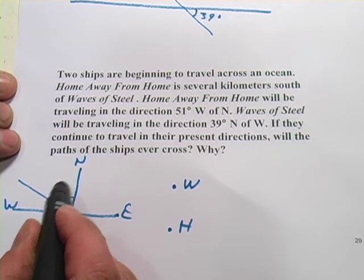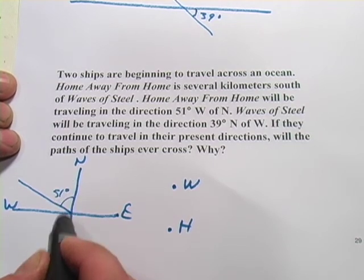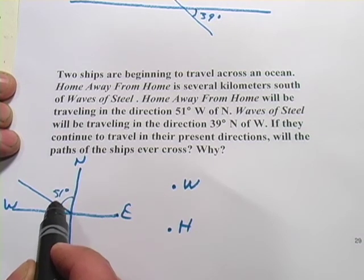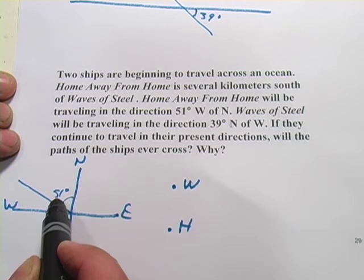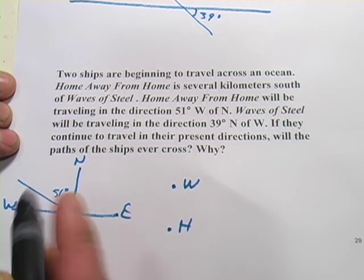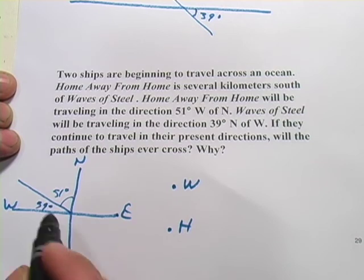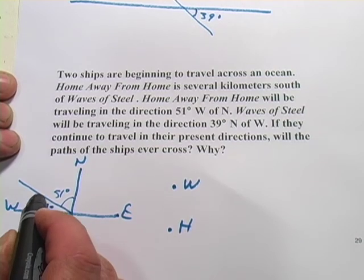Well, what we need to remember is that this is a right angle here. So there's 90 degrees total in there. So the first question I would ask is, what's 90 minus 51? And the answer to that is 39, which is kind of convenient.